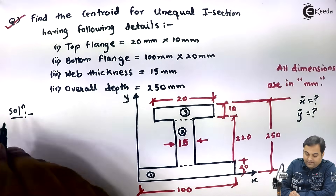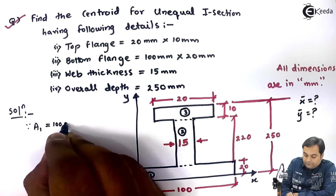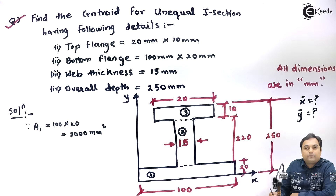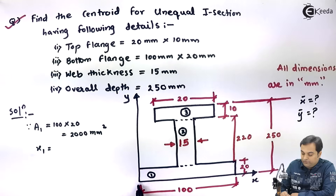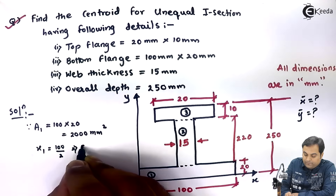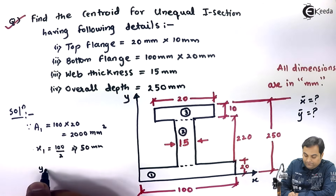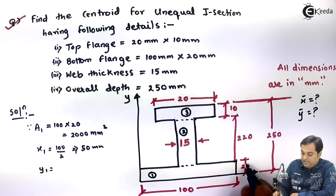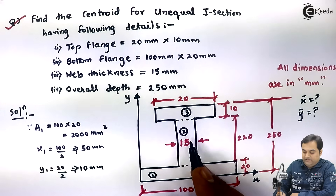For rectangle one (the bottom flange): Area 1 = 100 × 20 = 2000 mm². x1, the location with respect to the y-axis, is at half of 100, so x1 = 100/2 = 50 mm. y1, the location with respect to the x-axis, is at half of 20, so y1 = 20/2 = 10 mm.